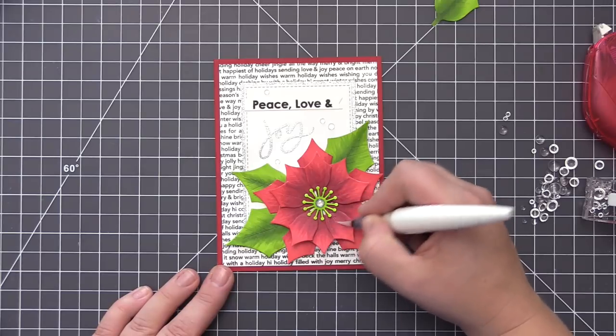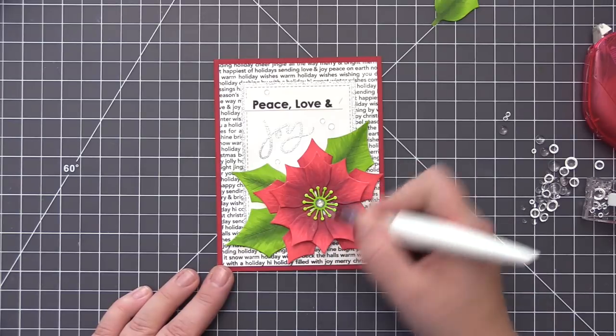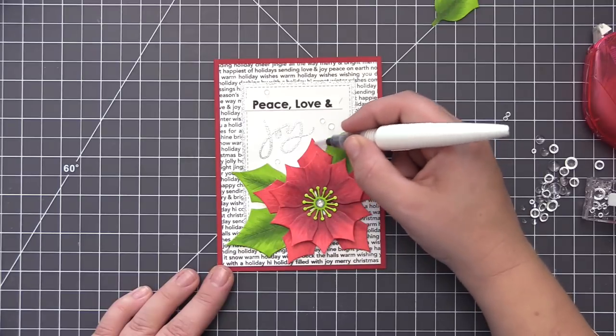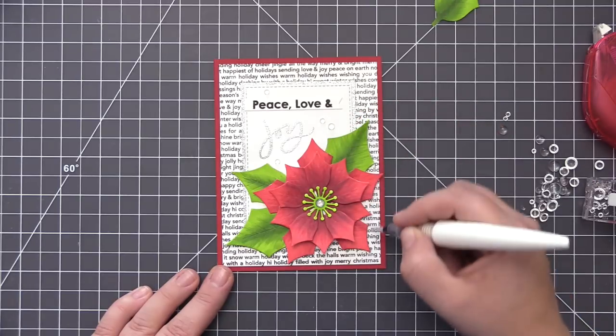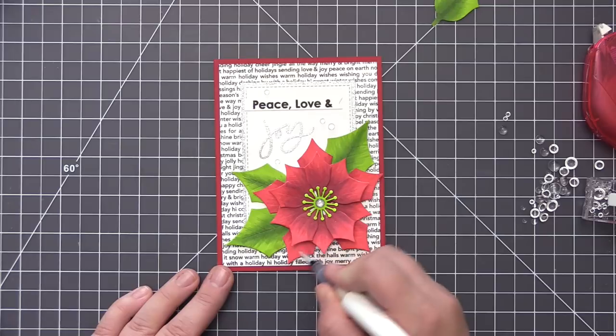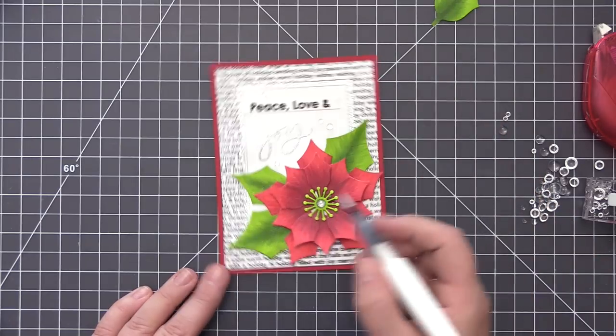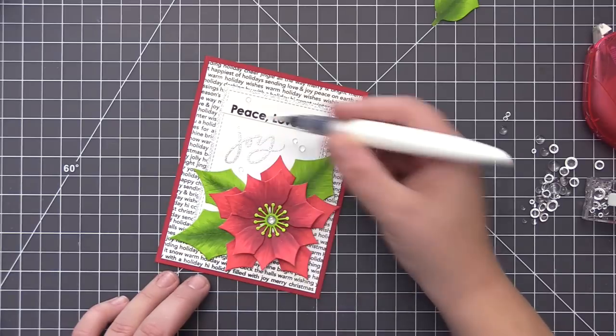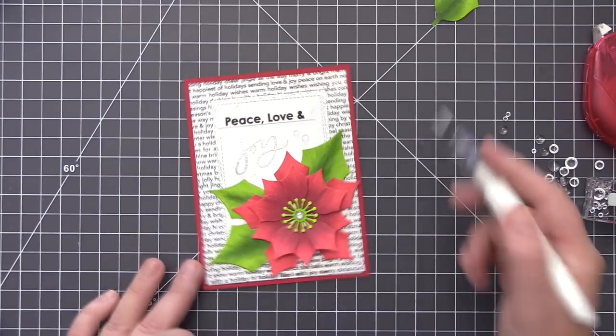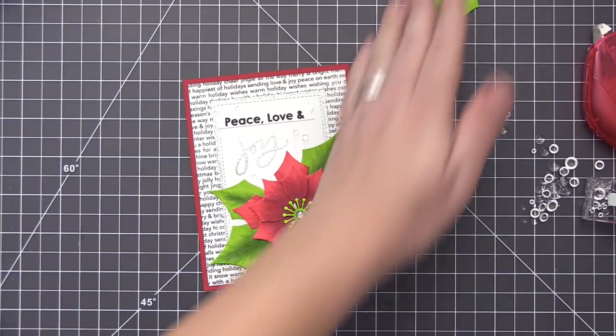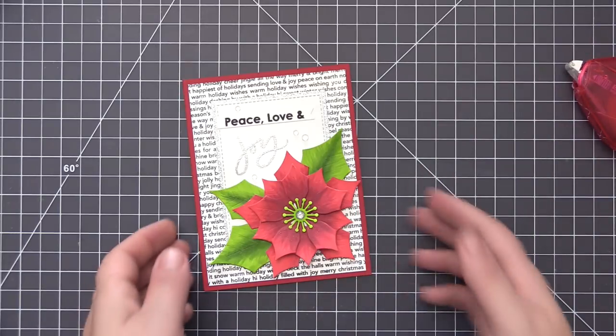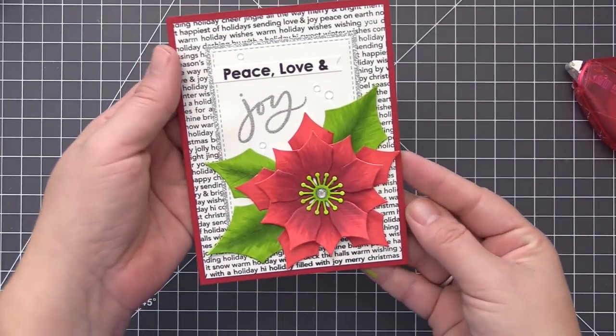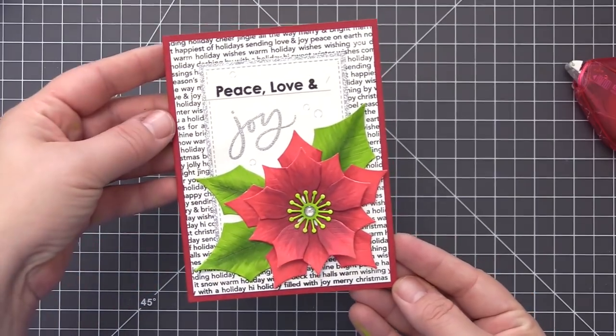This is a very subtle shimmer but it adds just enough sparkle and when the card hits the light the right way you get this really nice sparkle and shine on the flower. I love having any type of sparkle on a holiday card so this is a great pen to use just to add a little bit of that subtle shimmer to your designs. And then once I have that done we have finished our holiday card. This is a very traditional card for me. I tend to gravitate towards non-traditional colors so it was kind of fun to play with traditional reds and greens and create a card with them.